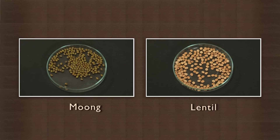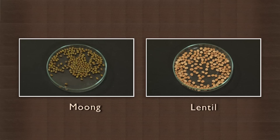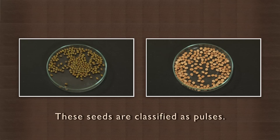The moong seeds or the lentils we have here are also edible, but they are produced in a fixed number of 1 to 12 seeds within a pod. They are produced by leguminous plants, which are dicotyledonous. These seeds are classified as pulses. So, this is one of the ways we classify edible seeds.